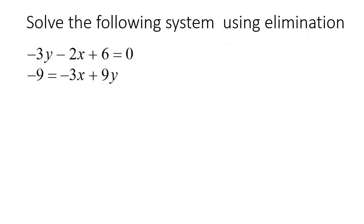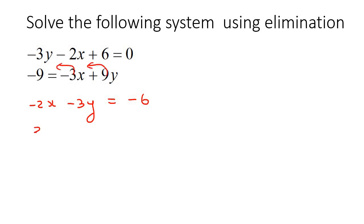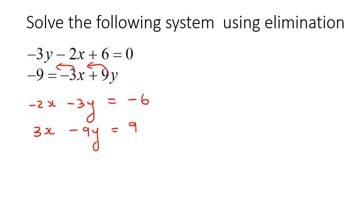Now we're going to do one more example — this one is really cool. Step one: get x and y on the left. Here x and y are on the left already, but I like to put x first. Then the positive 6 goes over to the other side. The 3x and 9y go over to the left-hand side: 3x becomes positive and 9y becomes negative. The negative 9 goes over and becomes positive 9. Now, can you see these are not the same, and these are also not the same?